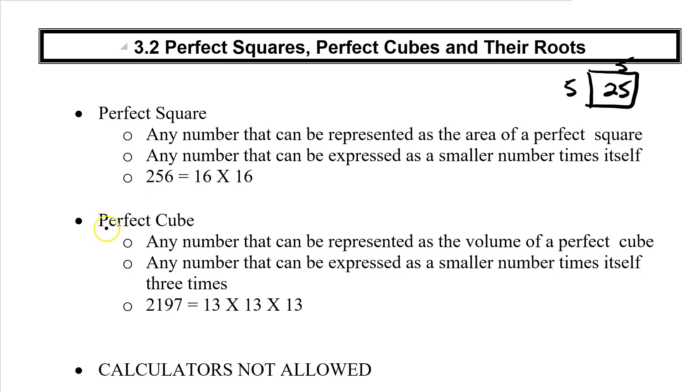Now if we look at a perfect cube, we've got to think of three dimensions. Any number that can be expressed as the volume of a perfect cube. So again volume of a cube, three dimensional cube, where all the sides are the same. 5, 5, and 5. 5 times 5 times 5 is 125. More traditionally, we think of it as any number that can be expressed as a smaller number times itself three times. So our example here is 2,197, 13 times 13 times 13.